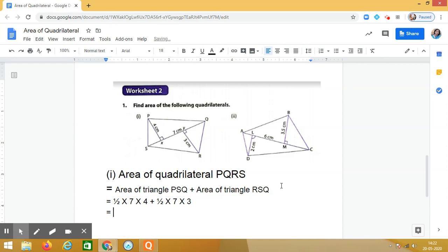Simplify this expression. This is half, this is half into 7, I'm taking this as common, so we are left with 4 plus 3. This is equal to, after simplification it is 7 into 7, that is 49, divided by 2, which is equal to 24.5 square centimeters.